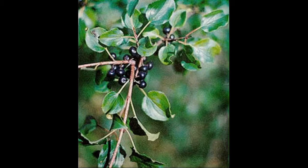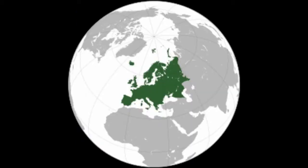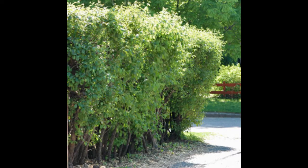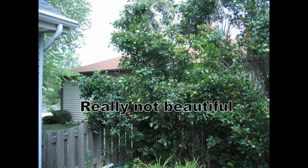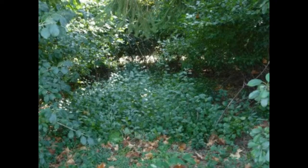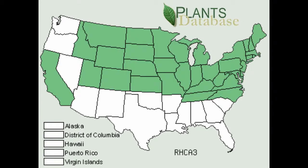Common Buckthorn, also known as European Buckthorn, is a bush that originates in Europe. Originally imported as a hedge plant to be planted around houses for beauty, the plant now grows uncontrollably in many parts of the U.S.